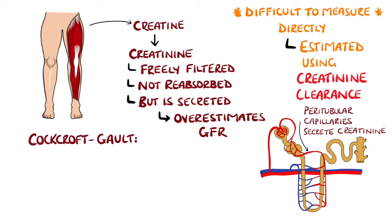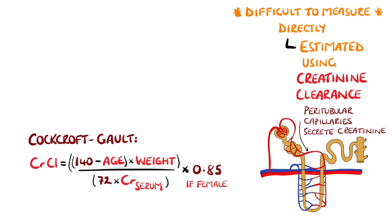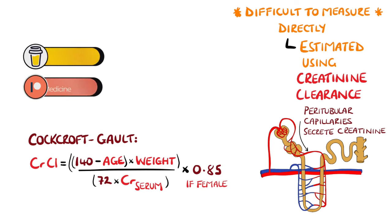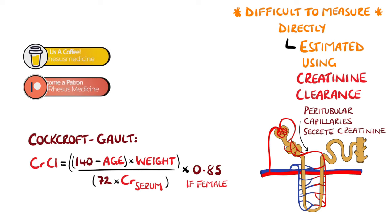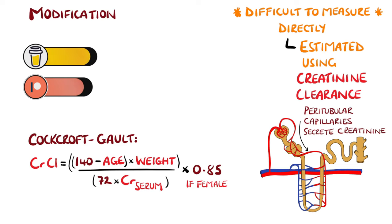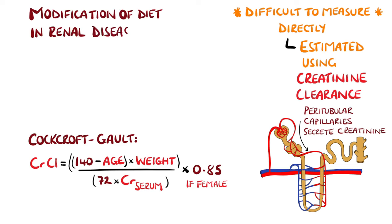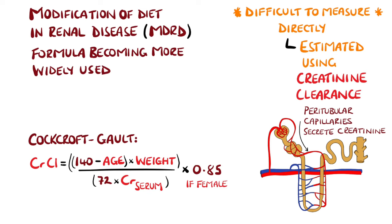The Cockroft-Galt formula is a famous formula used to estimate the creatinine clearance, and therefore GFR, taking into account age, mass, gender, and the serum creatinine. But more recently, other formulas, such as the modification of diet in renal disease study group formula, have become more widely used.